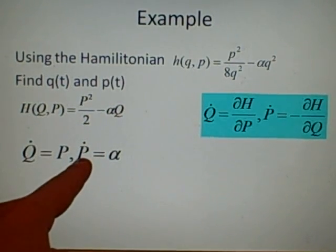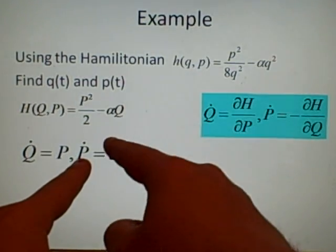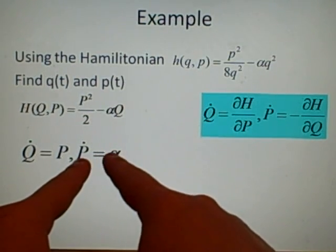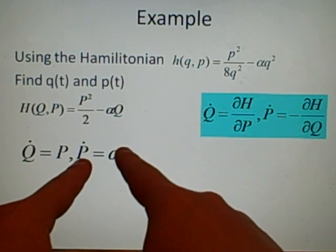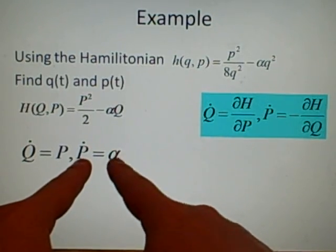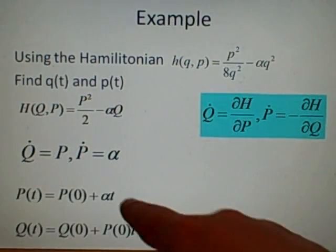So we'll do the P dot, which will go to, well, P(t) will equal P zero plus alpha times t. Yeah? Because we've gone up a power.